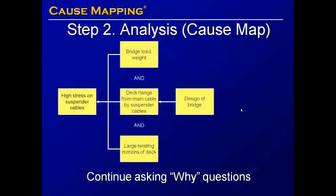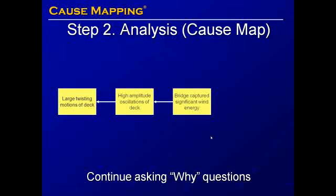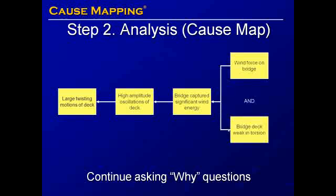High stress was also caused by large twisting motions of the deck. We continue asking why questions to add more detail to the causes of the twisting motions. Those motions were caused by high amplitude oscillations of the deck. The oscillations were caused because the bridge captured significant wind energy due to the wind force on the bridge, and because the bridge deck was weak in torsion.